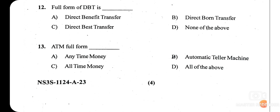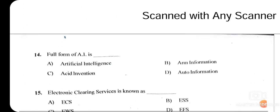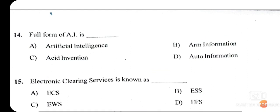Question fourteen: the full form of AI. AI stands for Artificial Intelligence — option A is the right answer. Artificial Intelligence is the intelligence of machines or software, as opposed to the intelligence of human beings. These machines and software mimic the problem-solving and decision-making capabilities of humans.